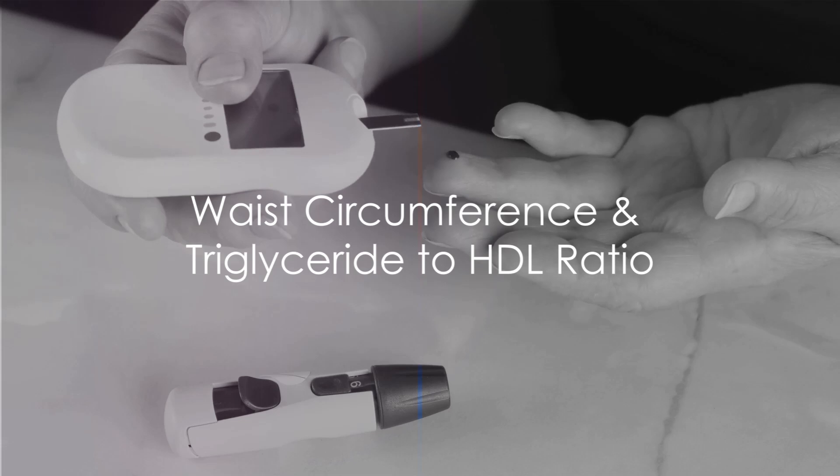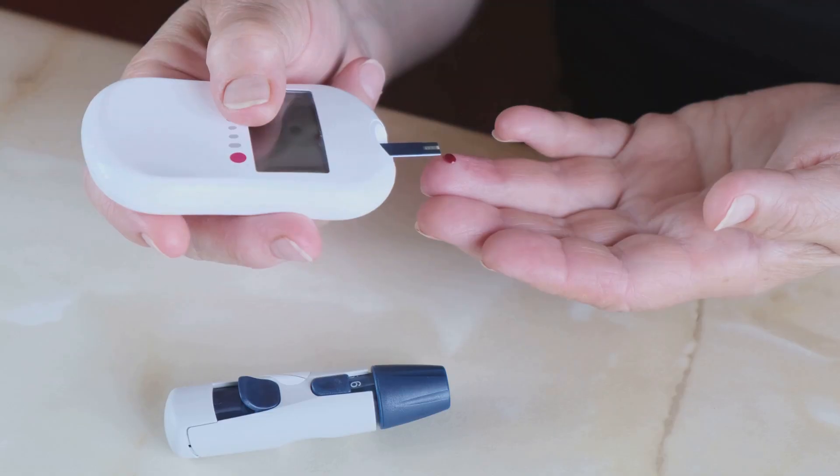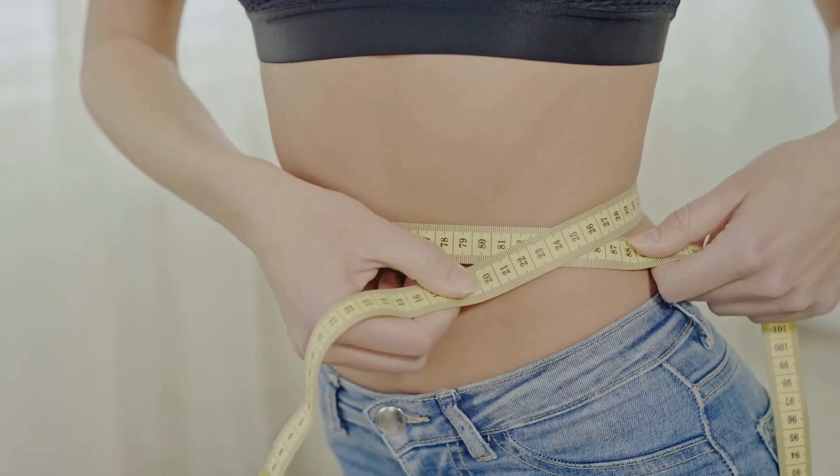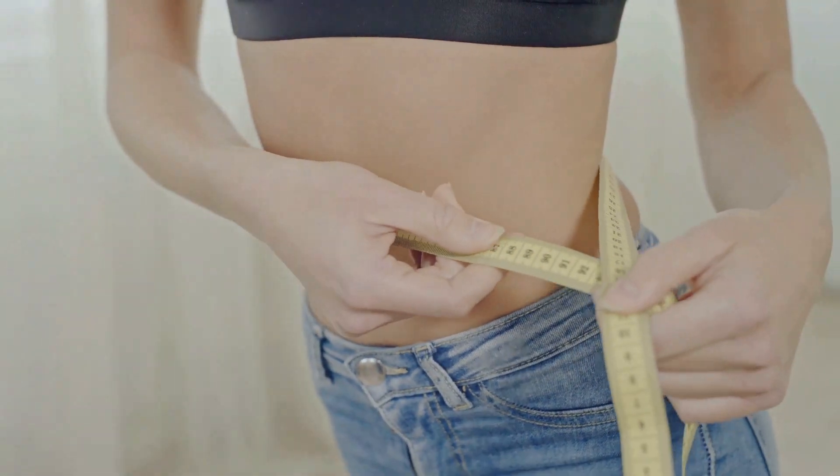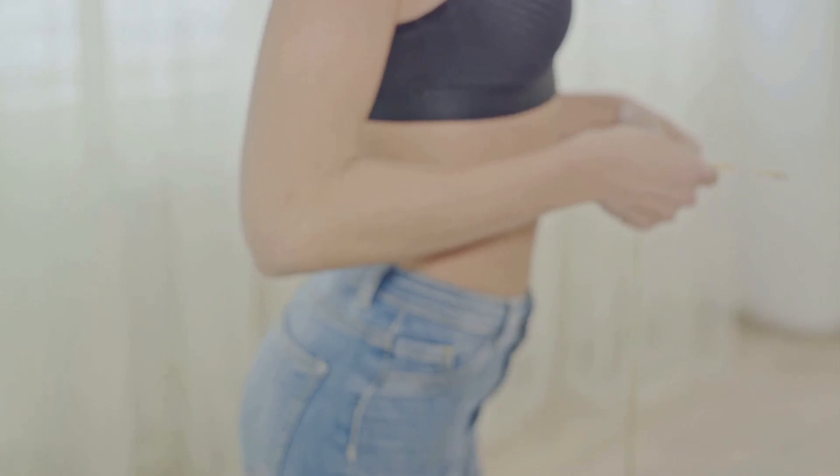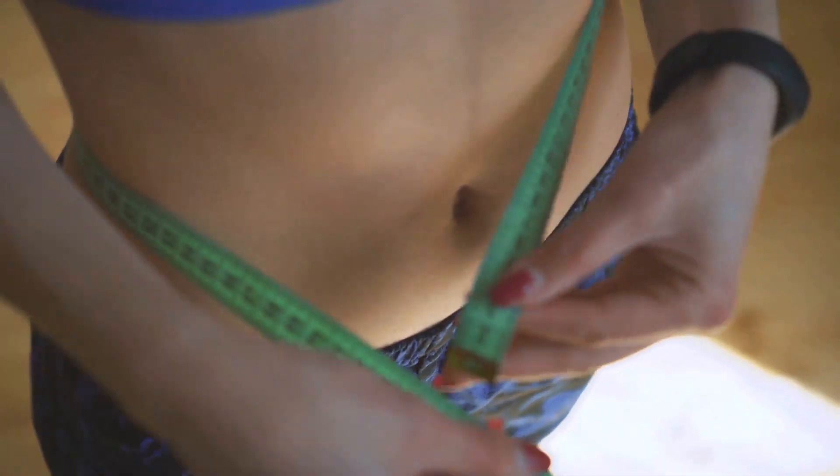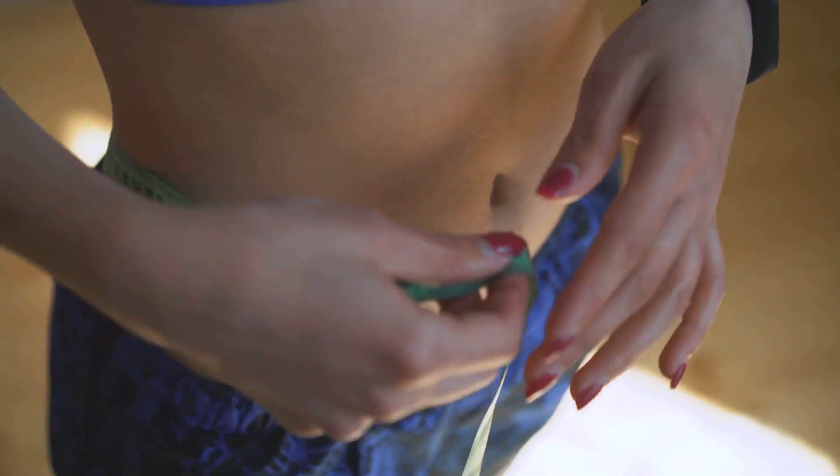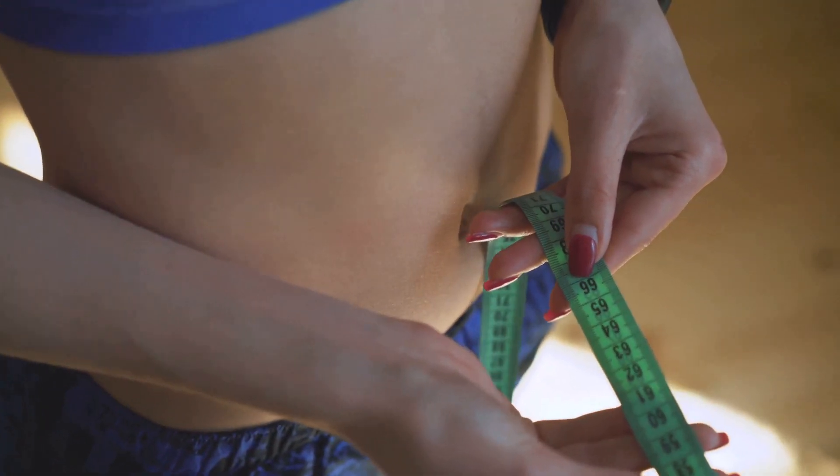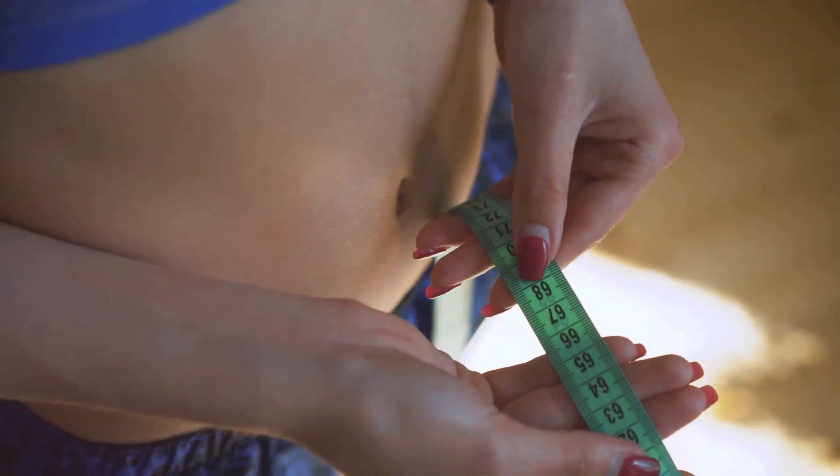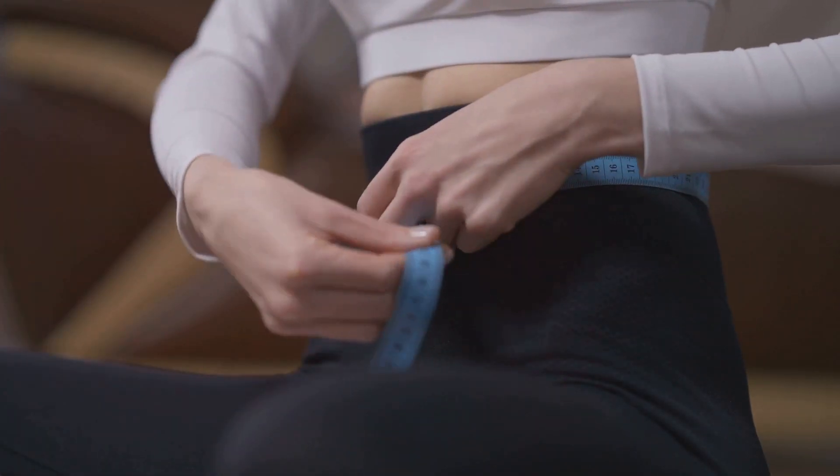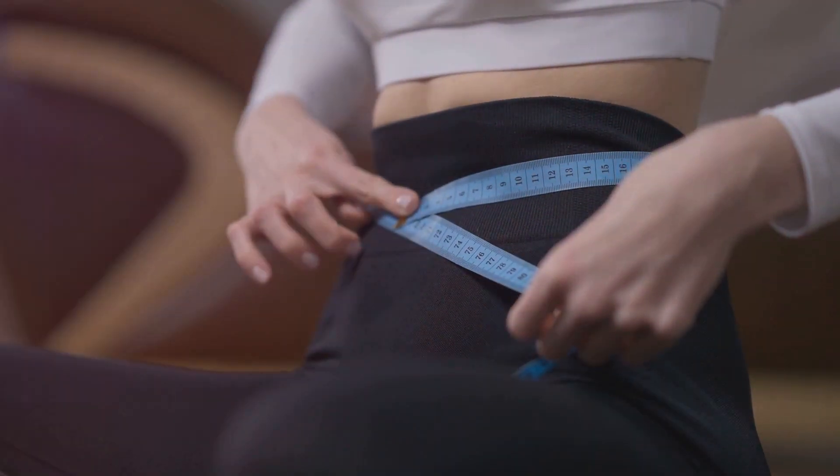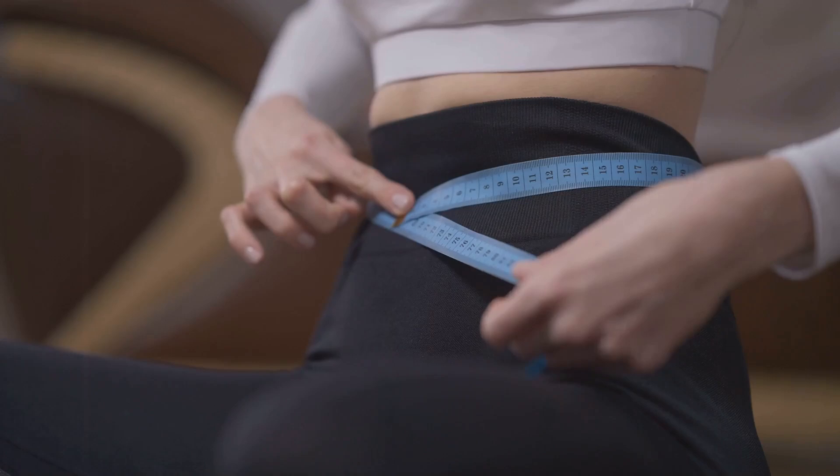We also have waist circumference and the triglyceride to HDL ratio as indicators. An often underappreciated metric in the realm of insulin sensitivity is waist circumference. As you may know, abdominal fat is not just a cosmetic concern but is closely linked to metabolic health. It's been found that an excess of fat around the waist is a clear sign of insulin resistance. Tracking your waist size is a simple and practical way to monitor changes in your metabolic health. It's easy to measure at home with a tape measure, making it accessible to everyone. However, it's important to note that while it's an indicative measure, it isn't a direct measure of insulin sensitivity.